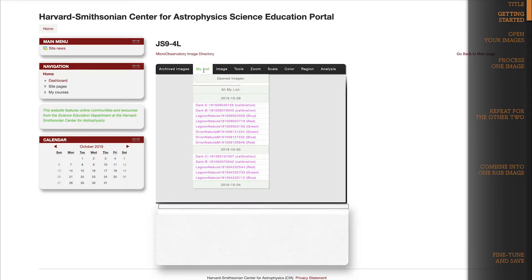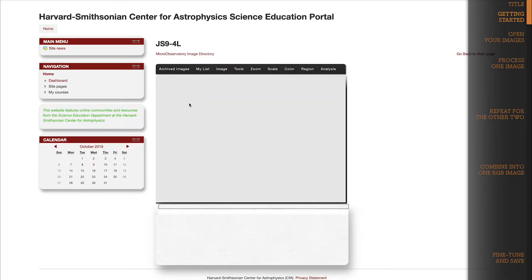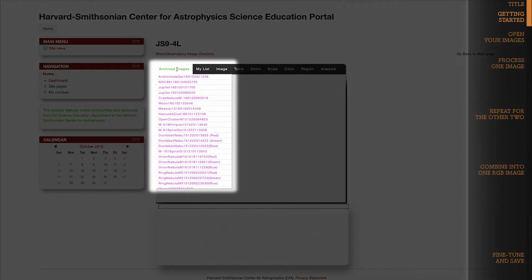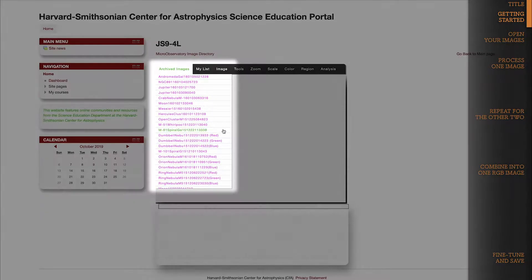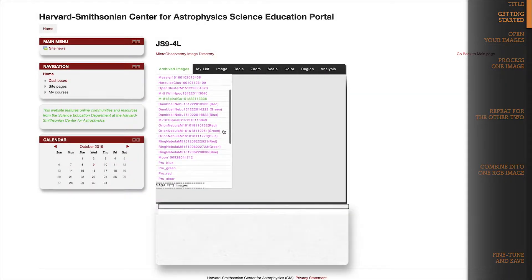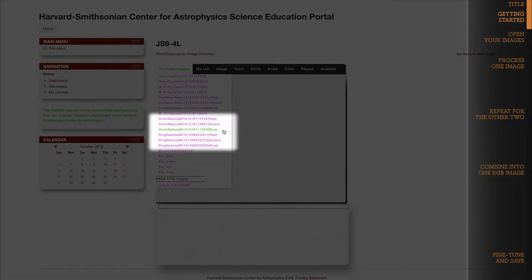If you don't have these images yet, you should first watch the tutorial called How to Request an Image, where you'll learn how to request images with RGB filters. Or, if you are just here to practice the process, you can choose RGB images from the Archived Images dropdown. Options like the Orion Nebula and Ring Nebula were taken with RGB filters. Make sure to open all three.